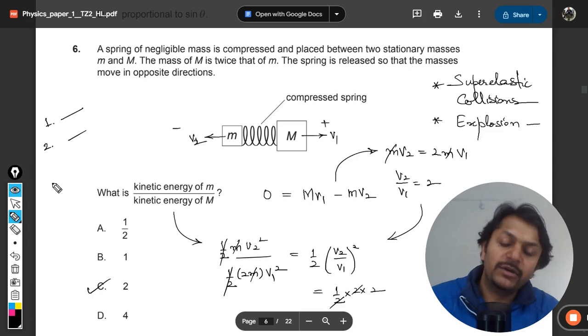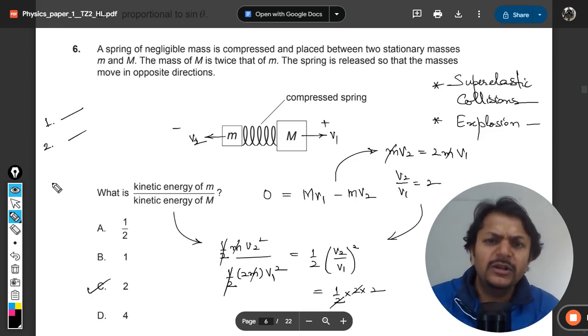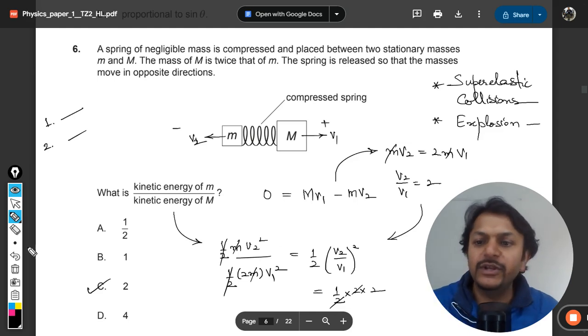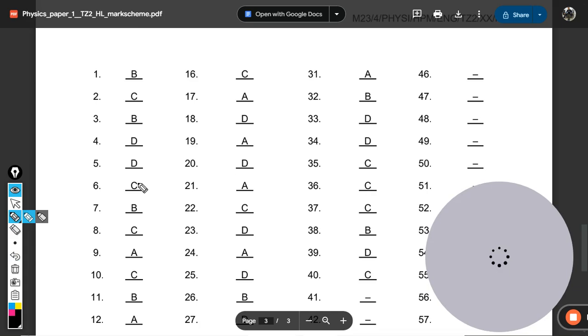We are not going for that kind of conservation of energy principle because the values are not given, x is not given. This is how we do this and the answer will be 2, will be C. Let's see the mark scheme, question number 6. Yes, the answer is C.